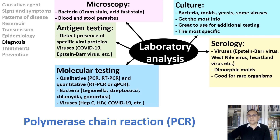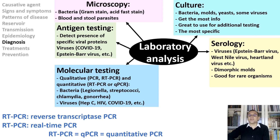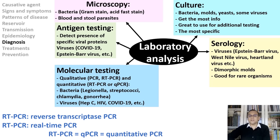Some viruses like COVID-19 do not have DNA in their genome but have RNA instead. To detect them, the RNA must first be transcribed into a DNA molecule — this is the goal of reverse transcriptase PCR, abbreviated as RT-PCR. When clinicians want to know the amount of virus in a sample, they run real-time PCR, also abbreviated RT-PCR or sometimes qPCR — Q standing for quantitative — to avoid confusion between the two methods.